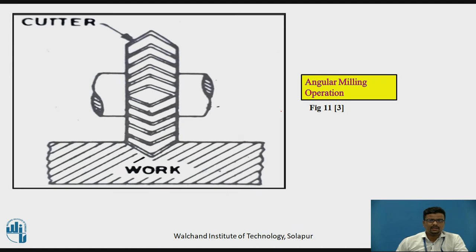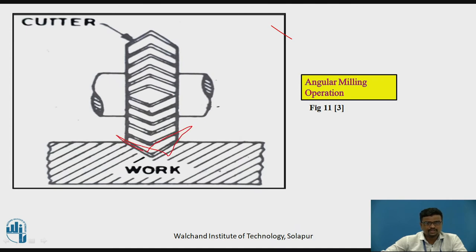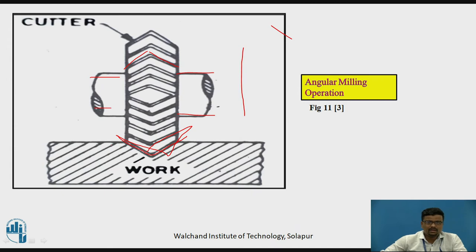For the angular milling operation, the angular milling cutter is used. You can see a V-shape notch that you want to generate. The double-side angular milling cutter is used here. The cutter is mounted on a horizontal spindle or horizontal arbor, it rotates, and angular cuts are generated with the help of the angular milling cutter.